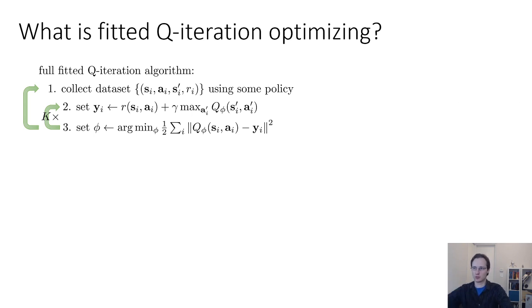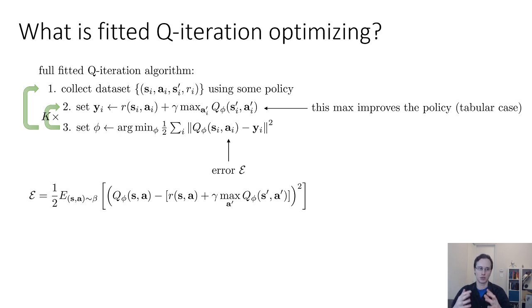Now, what exactly is it that fitted Q iteration is optimizing? Well, this step, the step where you take the max, improves your policy, right? So in the tabular case, this would literally be your policy improvement. And your step three is minimizing the error of fit. So if you have a tabular update, you would just directly write those y_i's into your table, but since you have a neural network, you have to actually perform some optimization to minimize an error against those y_i's, and you might not drive the error perfectly to zero. So you could think of fitted Q iteration as optimizing an error, the error being the Bellman error, the difference between Q phi s a and those target values y, and that is kind of the closest to an actual optimization objective. But of course, that error itself doesn't really reflect the goodness of your policy. It's just the accuracy with which you're able to copy your target values.